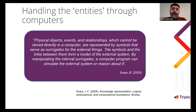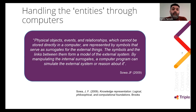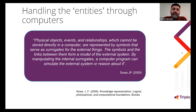The problem is how we can manage entities in a computer. There are two types: those that can be stored in a computer, like a photograph or a voice recording, and others that cannot, like objects of the physical world. We cannot put a bat — the animal — in a computer. As Sowa says, physical objects, events, and relationships that cannot be stored directly in a computer are represented by symbols that serve as surrogates for the external things. These symbols and the links between them form a model of the external system. By manipulating these internal surrogates, a computer program can simulate or reason about the external system.